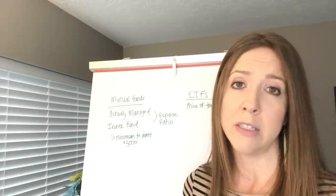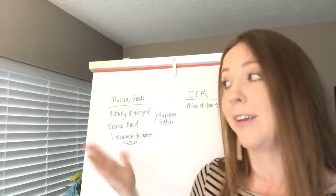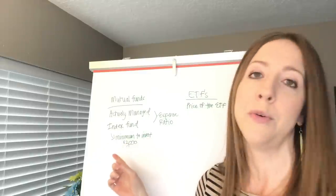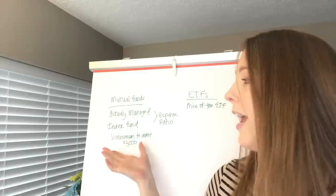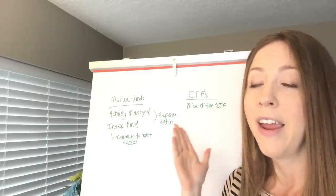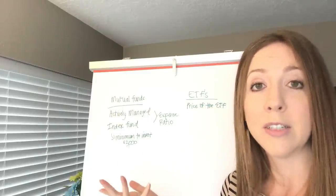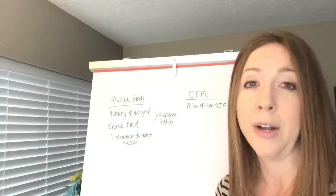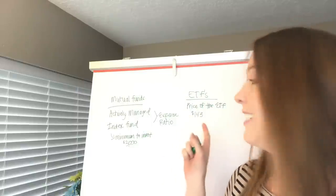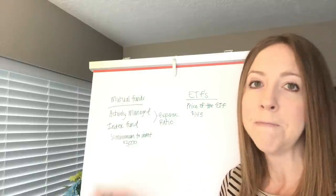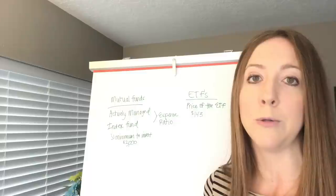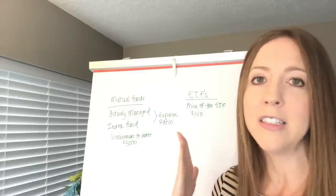Not all index funds require $3,000 — some could be $1,000, $2,000, or even up to $10,000 depending on the fund. By comparison, the Vanguard Total Stock Market ETF is priced at about $143 right now. That's a significant difference — $143 compared to $3,000 — so ETFs are easier to get started with if you don't have as much money to begin investing.